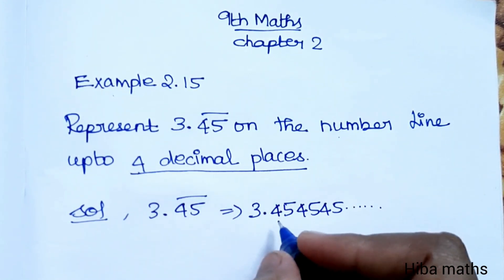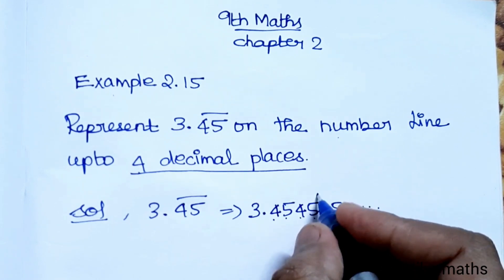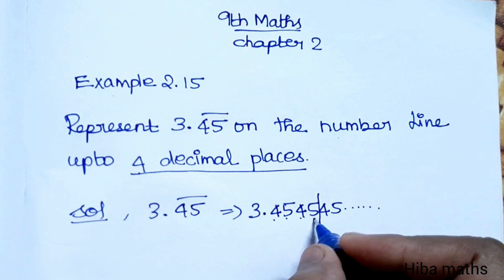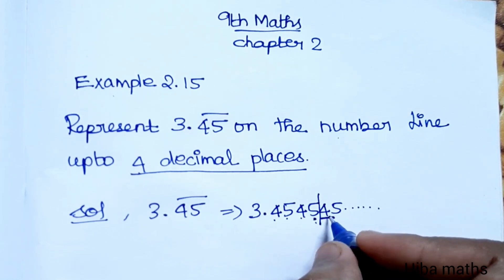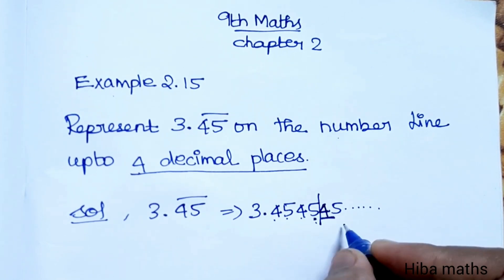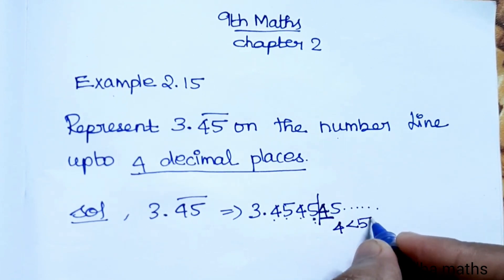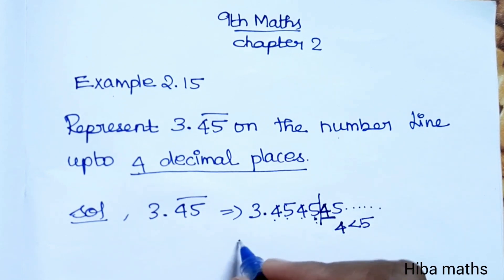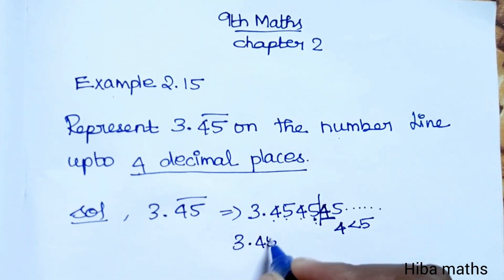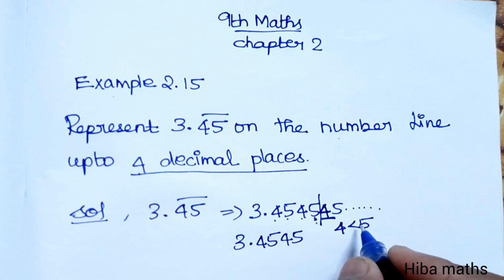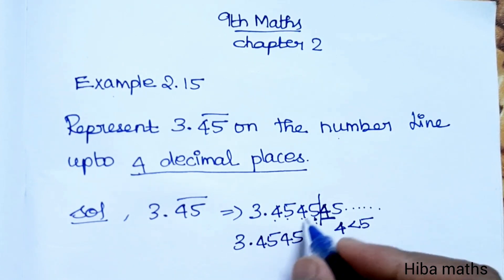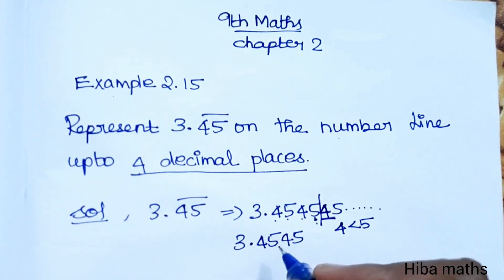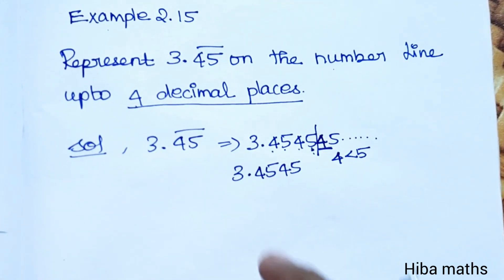We need 4 decimal places. Round off to 4 decimal places. 5 is a lesser number, 4 is a lesser number — this number will be updated. So 3.4545 — one way the number is a lesser number. The value is 3.4545. Now draw the number line.